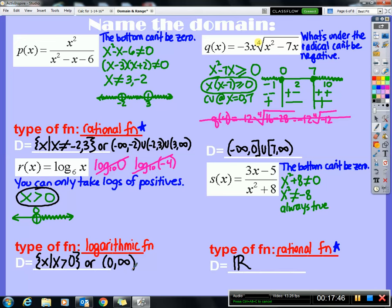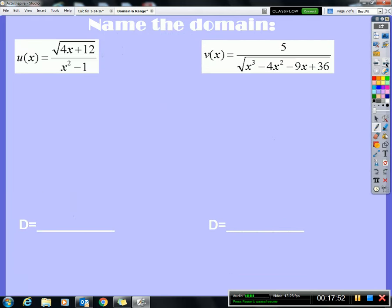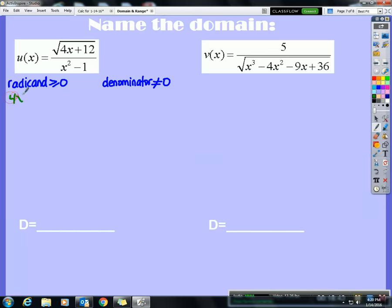So now we're going to have two final examples where I want you to think about what do you do with u of x, because you've got two issues. You've got something under a square root and you've got a denominator. So let's think about both ideas. First of all, I know that what's under the radical, I'll actually use the correct word here, the radicand can't be negative. The radicand must be greater than or equal to 0. And then what's on the bottom of the fraction, the denominator, cannot equal 0. So I've got two ideas that I need to algebraically deal with. So the radicand is 4x plus 12 and that can't be negative, so it's got to be either 0 or positive. So 4x has got to be greater than or equal to negative 12, or x has got to be greater than or equal to negative 3.